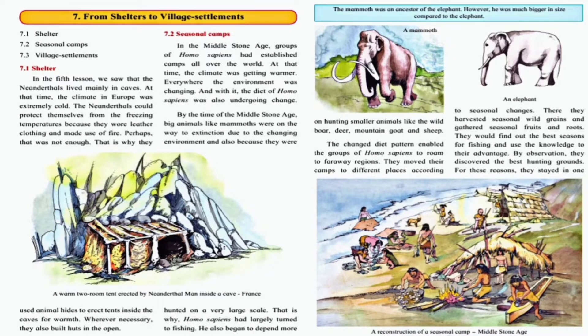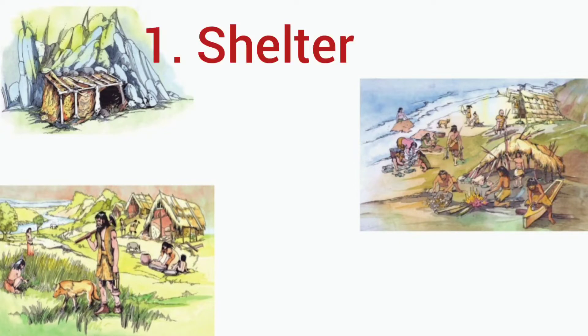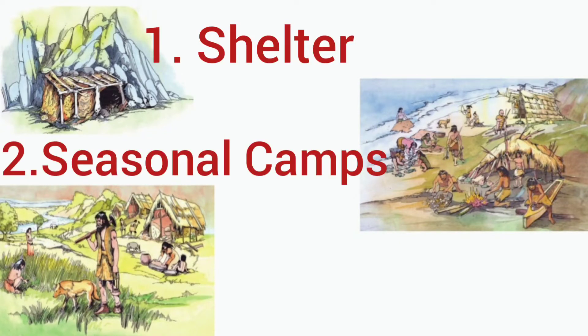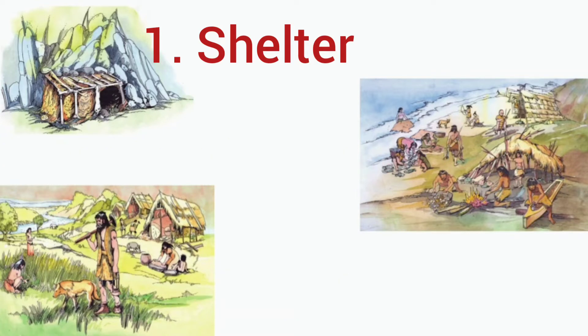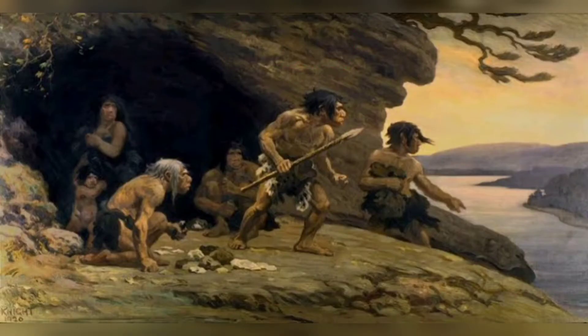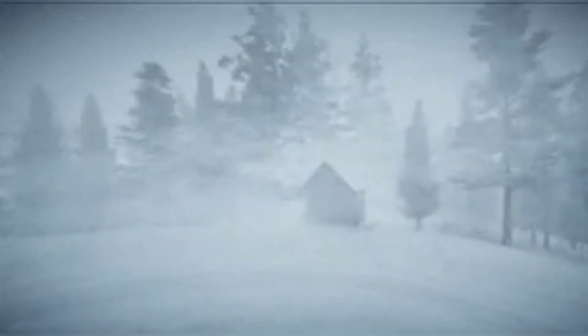In this lesson we are going to discuss shelters, seasonal camps, and village settlements. Let's begin with shelter. As we have seen in our previous video, Neanderthal man lived mainly in caves. At that time the climate in Europe was extremely cold.